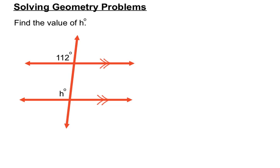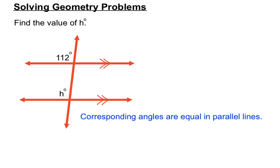Next question: we've got to figure out whether this is alternate, corresponding, or co-interior. H is in the top left-hand corner of the bottom intersection and the 112 is in the top left-hand corner of the top intersection, so they're in matching or corresponding positions. Corresponding angles are equal in parallel lines — so we don't have to do a lot of calculating. H is just 112 degrees.